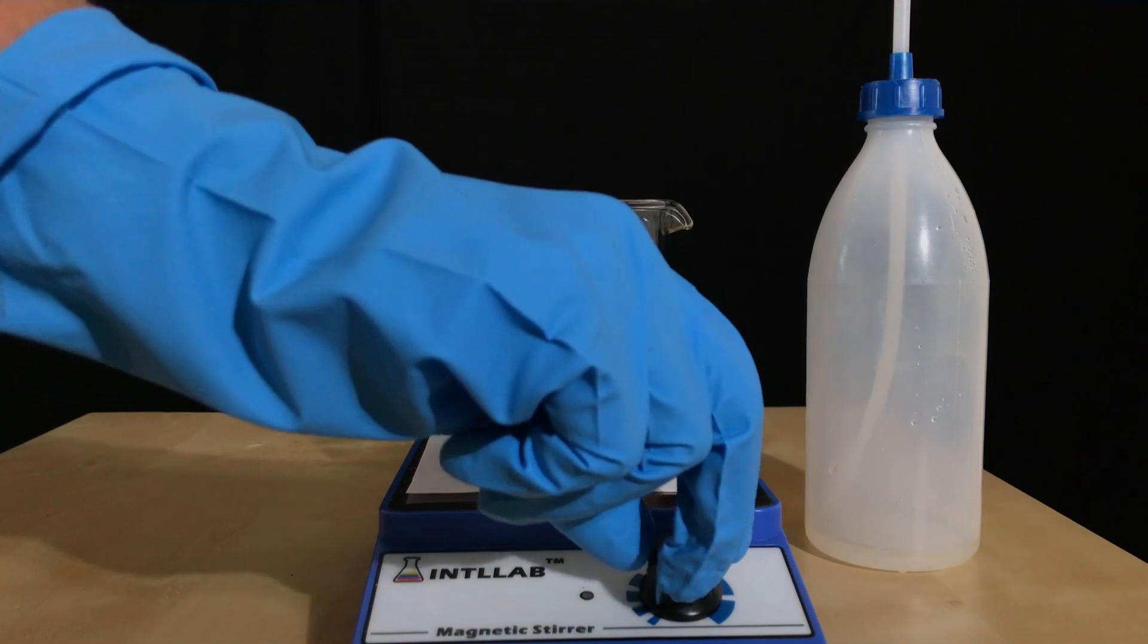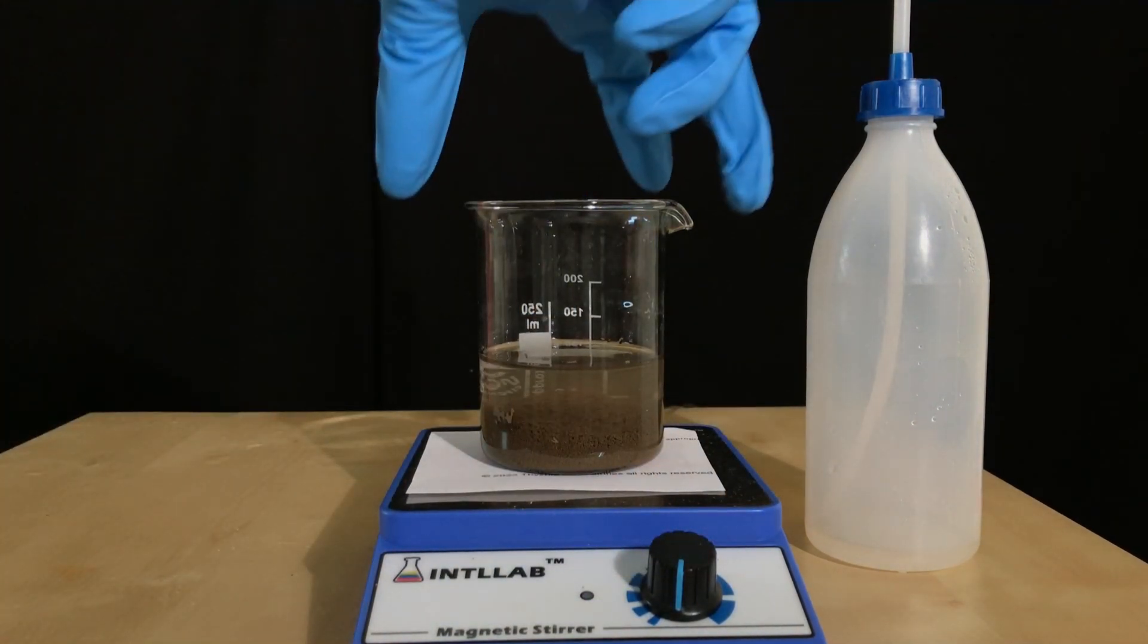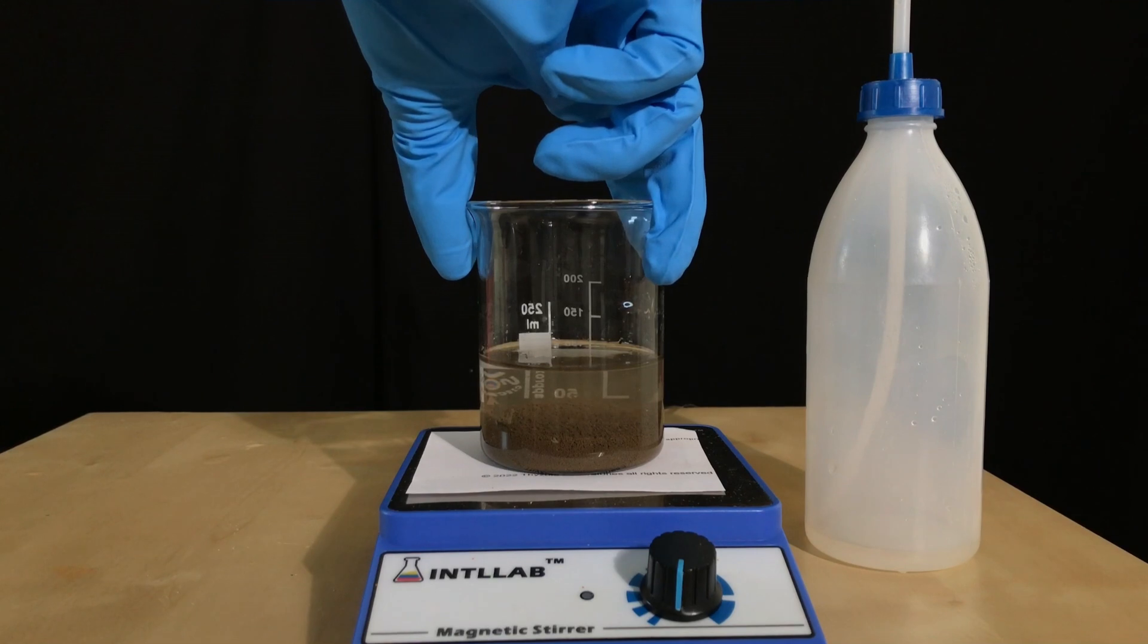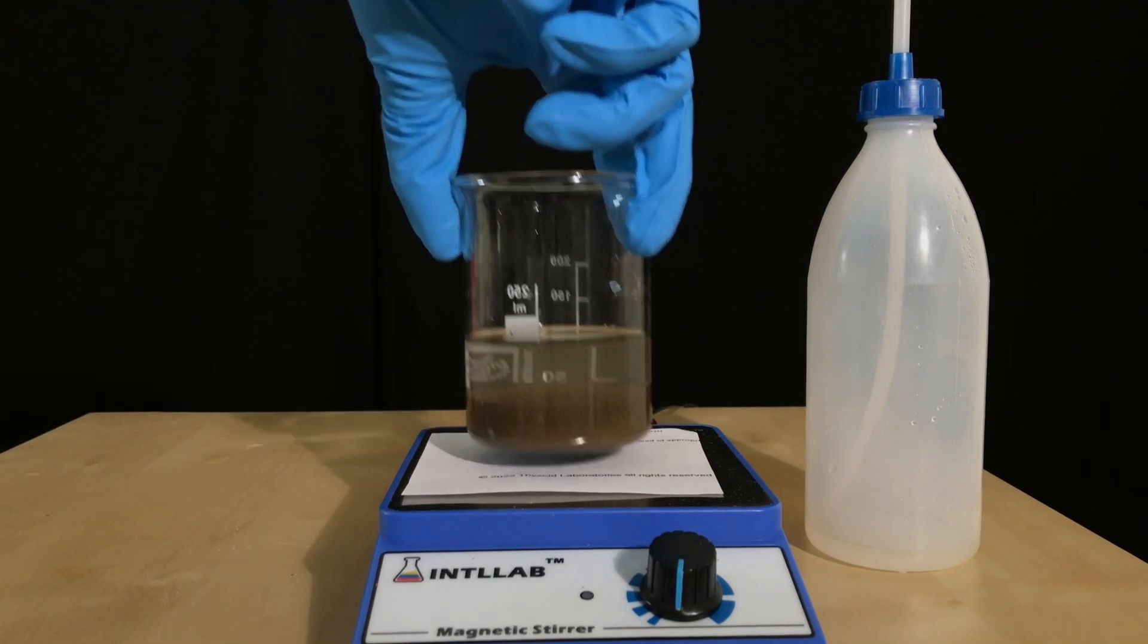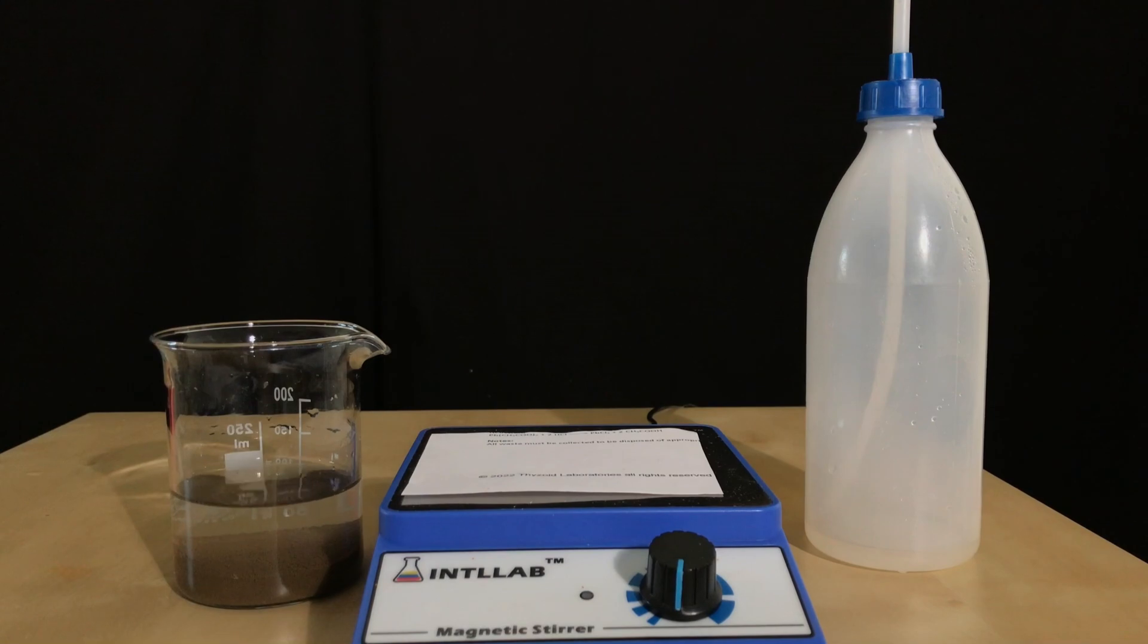10 minutes later, the magnetic stirrer was turned off and as you can see, the silver oxide quickly settled down. When I made mercuric oxide, it also settled down quite quickly and this reminded me of it.